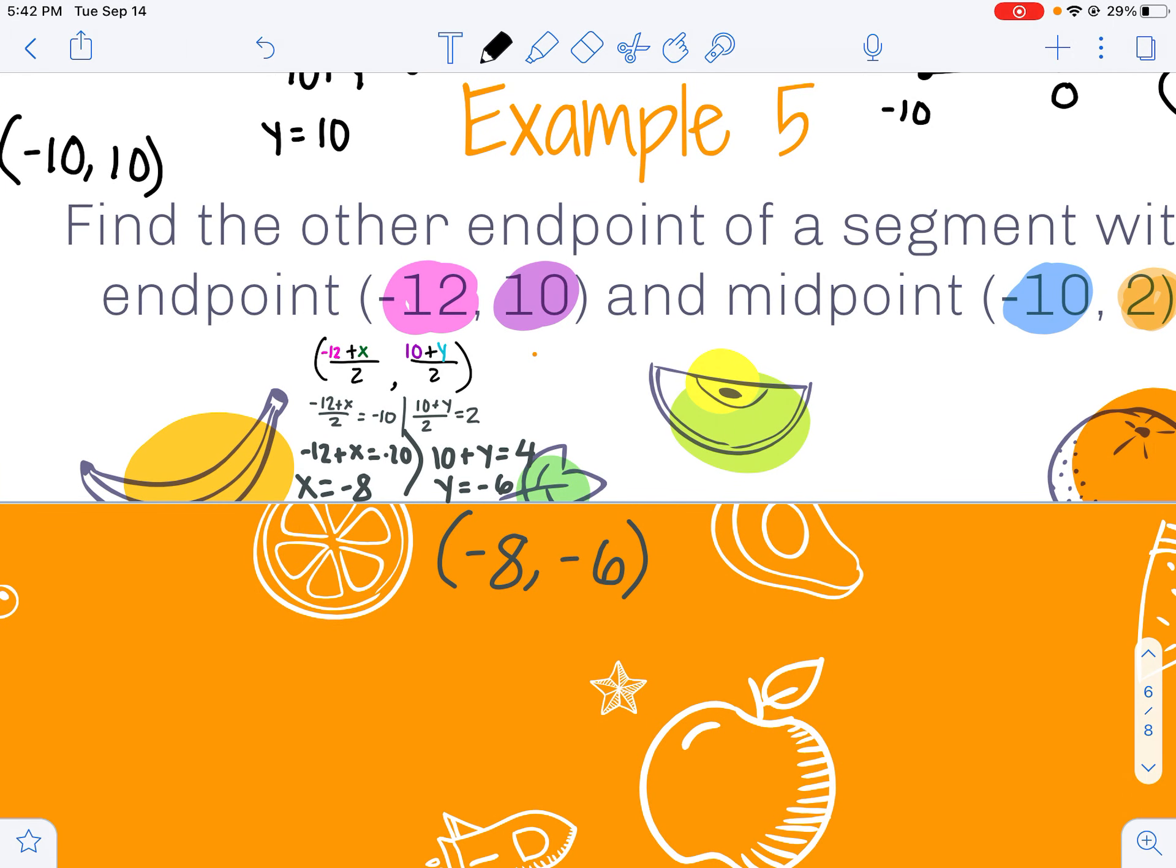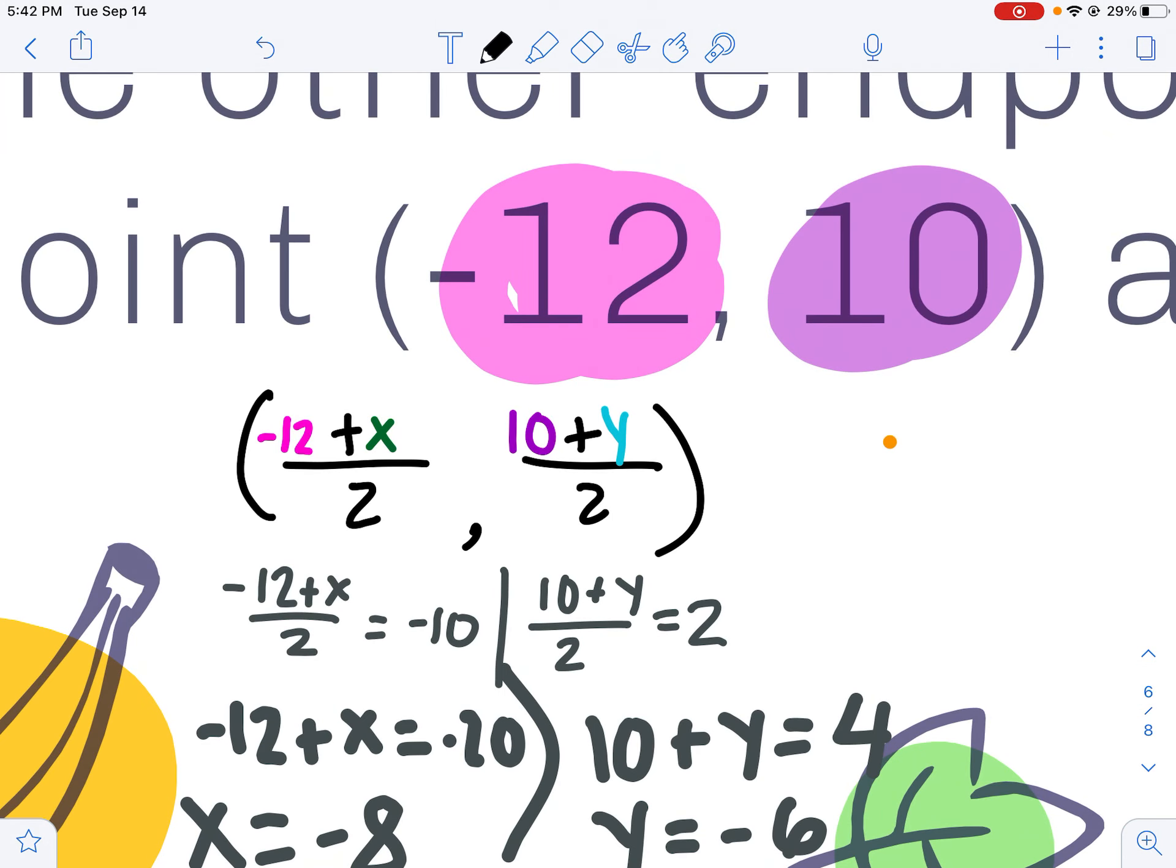Same exact idea on example 5. I can take my known endpoint plus my missing divided by 2 and make an algebraic formula. My known y value plus my missing y value divided by 2.